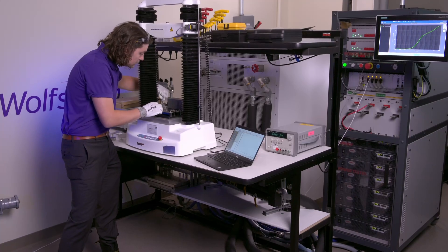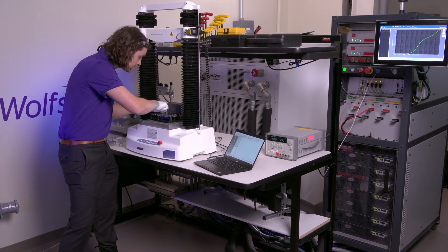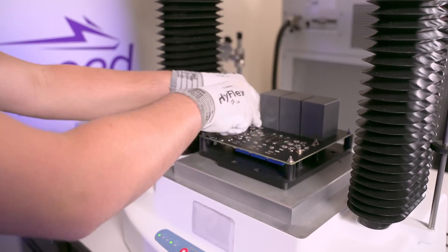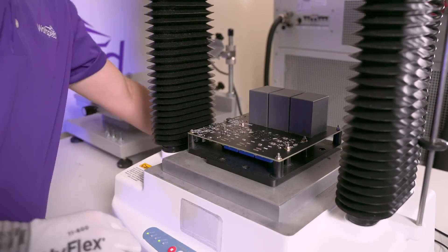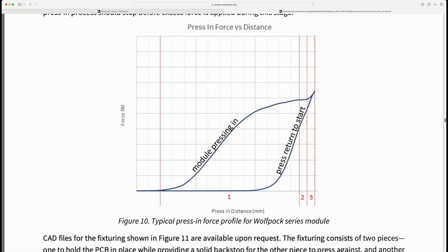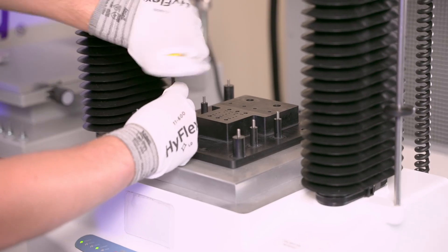Without proper support, the board will experience flexing during the press-in process. Not only can this lead to improper pin engagement, it could potentially damage the PCB or its populated components. To prevent warpage once the press-in force is applied, we recommend supporting the board with a flat, sturdy surface with pin cavities such as this.